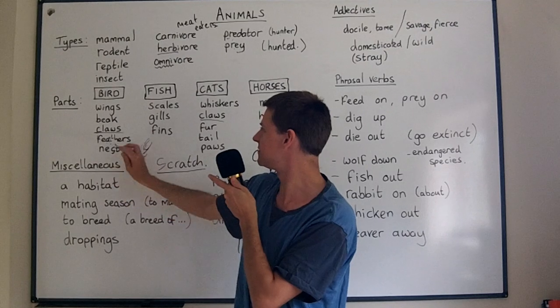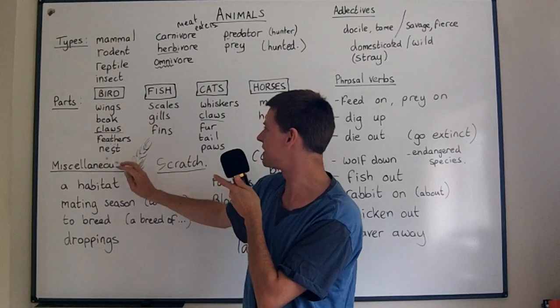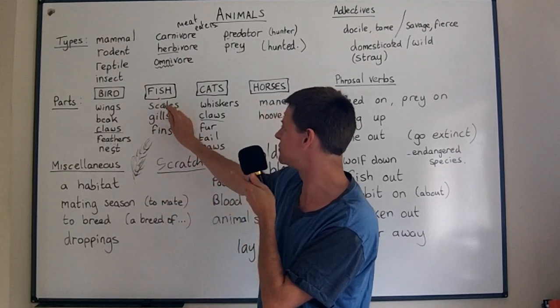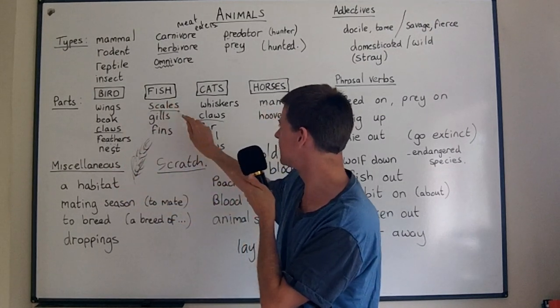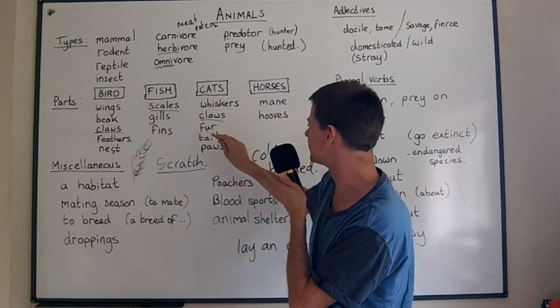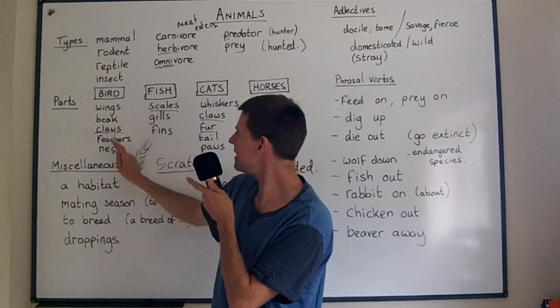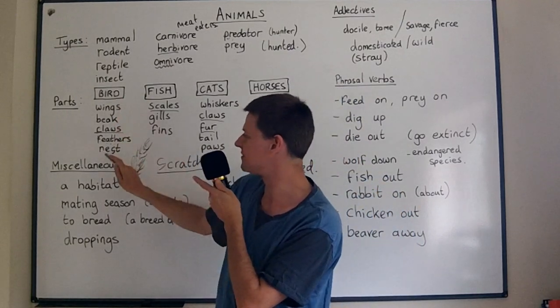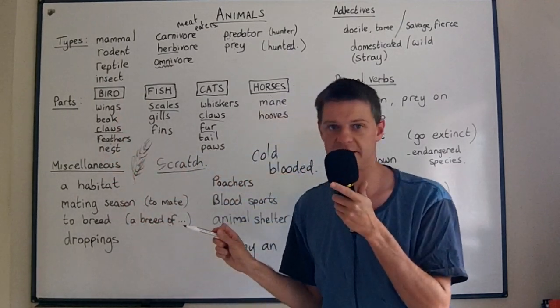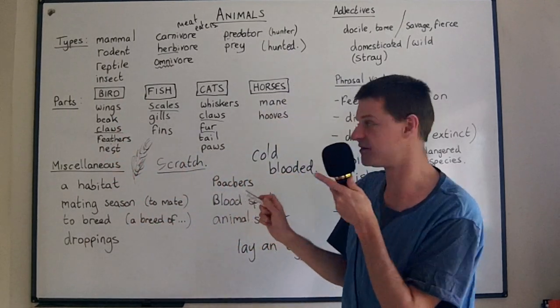Birds are covered in feathers, just like fish are covered in scales and cats are covered in fur. Birds also have a nest, which is where they keep their eggs.